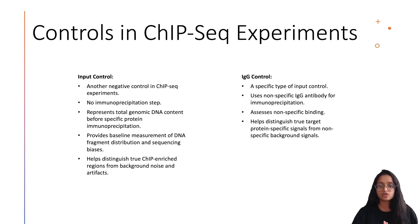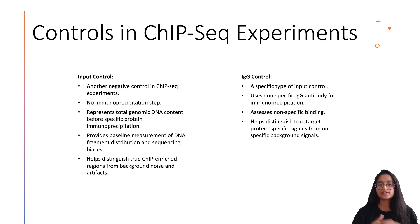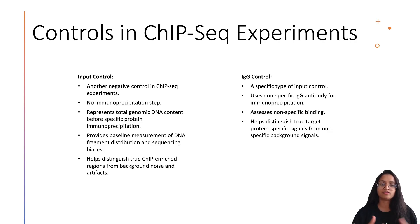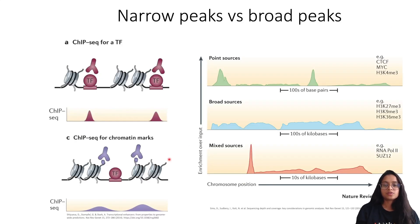The input control helps distinguish true ChIP-enriched regions from background noise and artifacts. The other control type is the IgG control, which uses an immunoglobulin G antibody for the immunoprecipitation step instead of the specific antibody against the target protein. IgG is a non-specific antibody that binds to various proteins and DNA non-specifically. This control helps researchers assess non-specific binding and distinguish true target protein-specific signals from background. Because IgG controls often produce little amplifiable DNA, input controls are more widely used to normalize ChIP-seq signal.